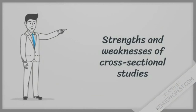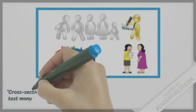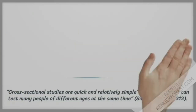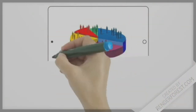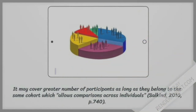Strengths and weaknesses of cross-sectional studies. Strengths: they are quick and relatively simple, and researchers can test many people of different ages at the same time. It may cover a greater number of participants as long as they belong to the same cohort, which allows comparisons across individuals.